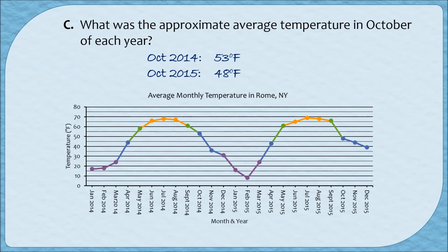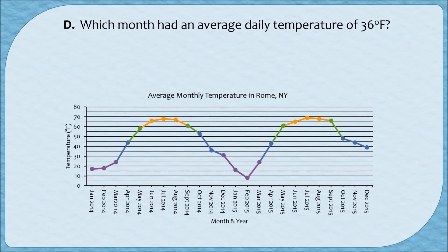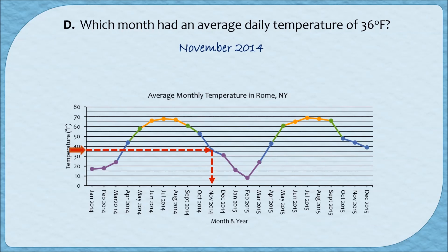Just make sure to label your answers both with degrees Fahrenheit as well as the month and year. Which month had an average daily temperature of 36 degrees Fahrenheit? Instead of looking at a month and reading up, we look at a temperature of about 36 and read over to the data point. 36 is just above the halfway point between 30 and 40, or just above the line for 35. Reading over until I hit a specific data point and then looking down, I see this was November of 2014 — which had an average daily temperature of about 36 degrees Fahrenheit.